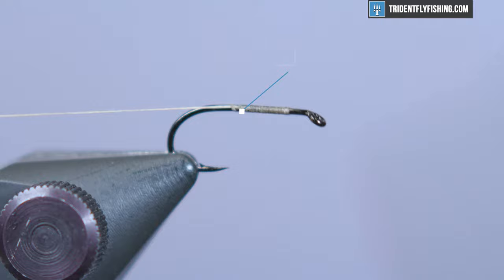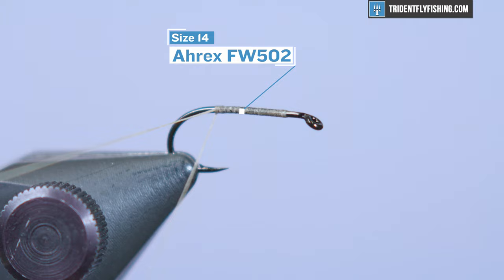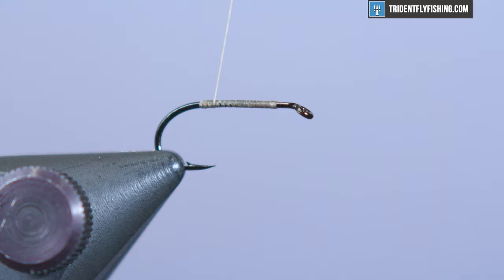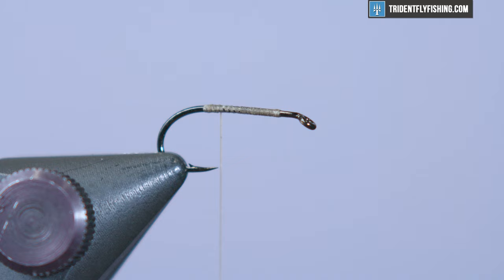We're gonna get started with an Arax FW 502 hook. This is a size 14, but you can tie it anywhere from 20, 22, all the way up to a 10 or so. It's a pretty versatile fly in terms of size. We're gonna wrap a base of unithread. This is 8/0 in the color tan. Color doesn't matter, you can get away with gray, maybe a black if you like.